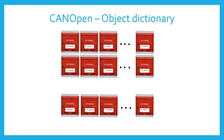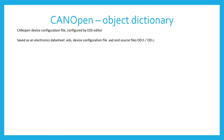The object dictionary is a configuration file specific for each device. It is configured by an EDS editor. It contains a list of variables, its indices and subindices, data types, length of data, and attributes. Each object has its dedicated index. Some objects such as arrays or records have also subindices.